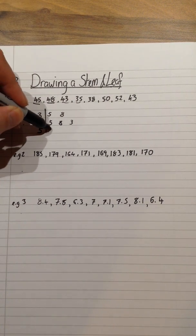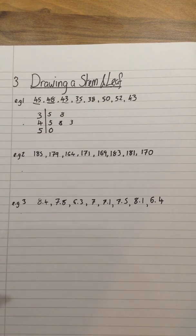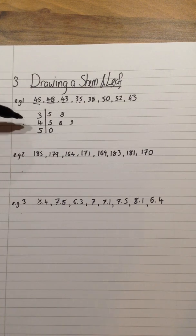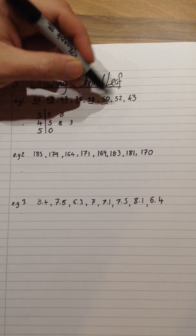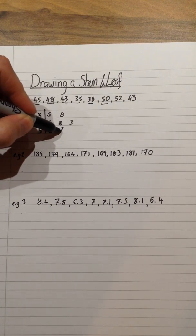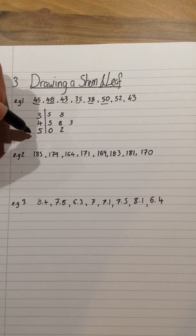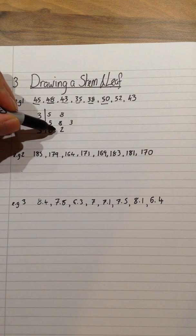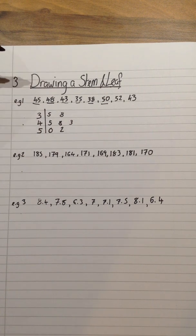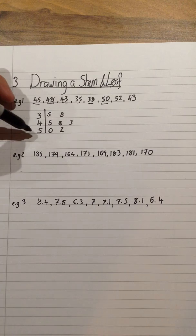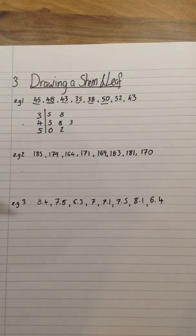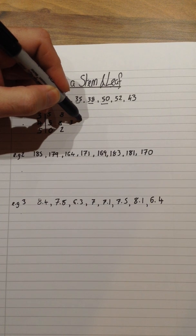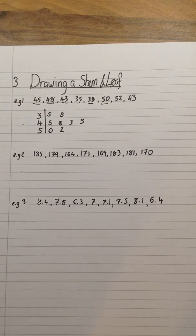52 is my next one. So again, leave a little space. Put the number 2 to stand for 50, 2. And 43 is my next one. Even though I've already got a 43, I need to show that there are 2 in the list. So again, small space and the number 3 there.